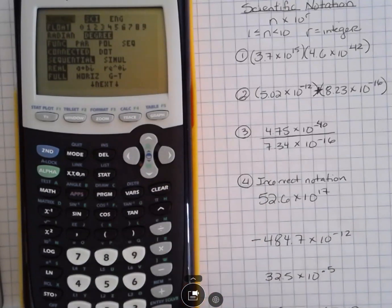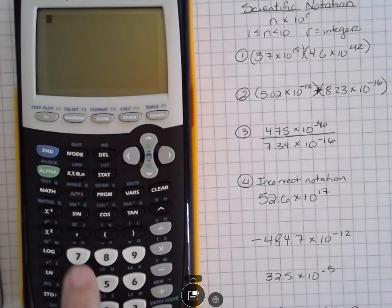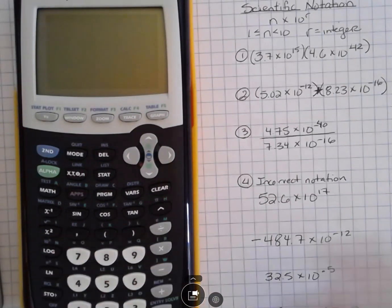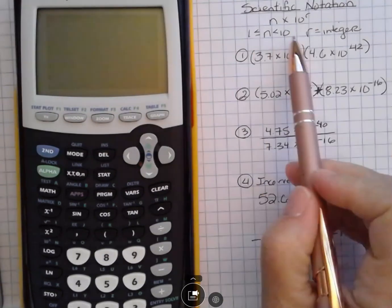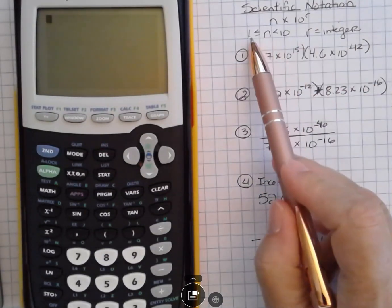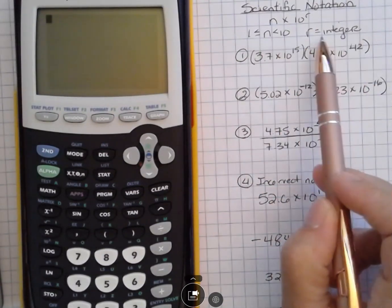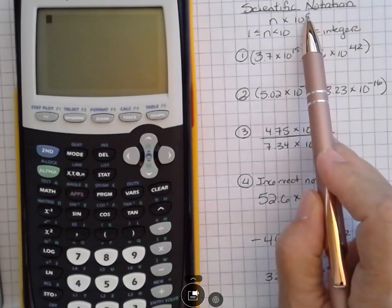But for the most part, I don't recommend that. I think we can just do this easier by using the EE button on your calculator just above the comma there. Remember, scientific notation, the N should be between 1 and 10, 1 inclusive, so it could be 1 but it can't be 10, and then an integer for the power of 10.